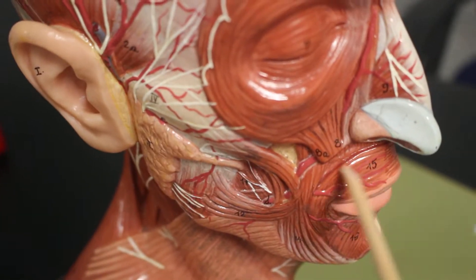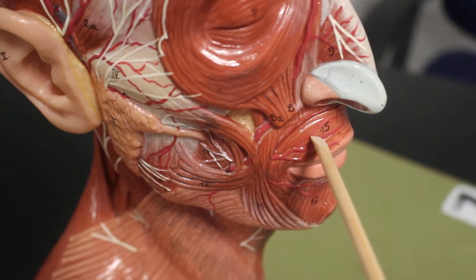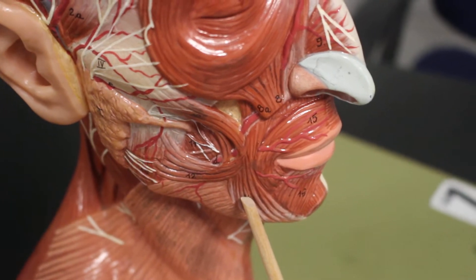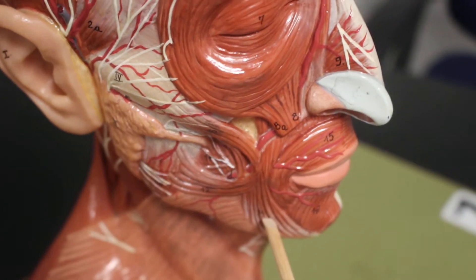Then this muscle goes all the way around the lips. It is orbicularis oris. Then from there we have depressor anguli oris.